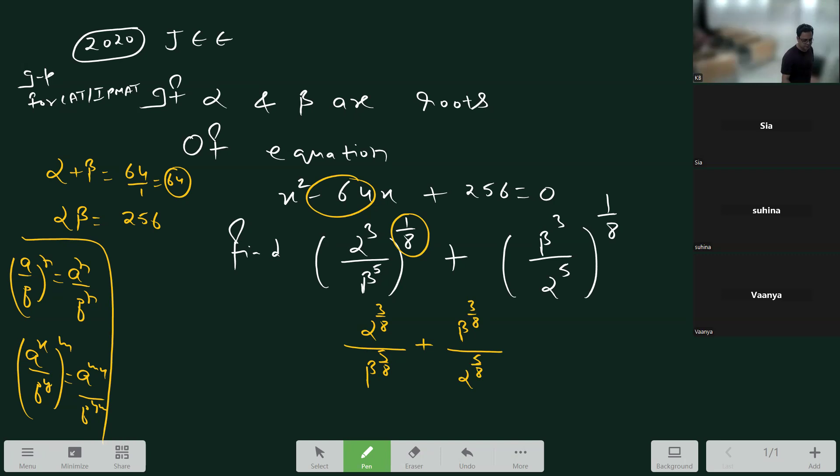Alpha times alpha times alpha into the level, into beta. Alpha beta to the whole 5 by 8, understand?